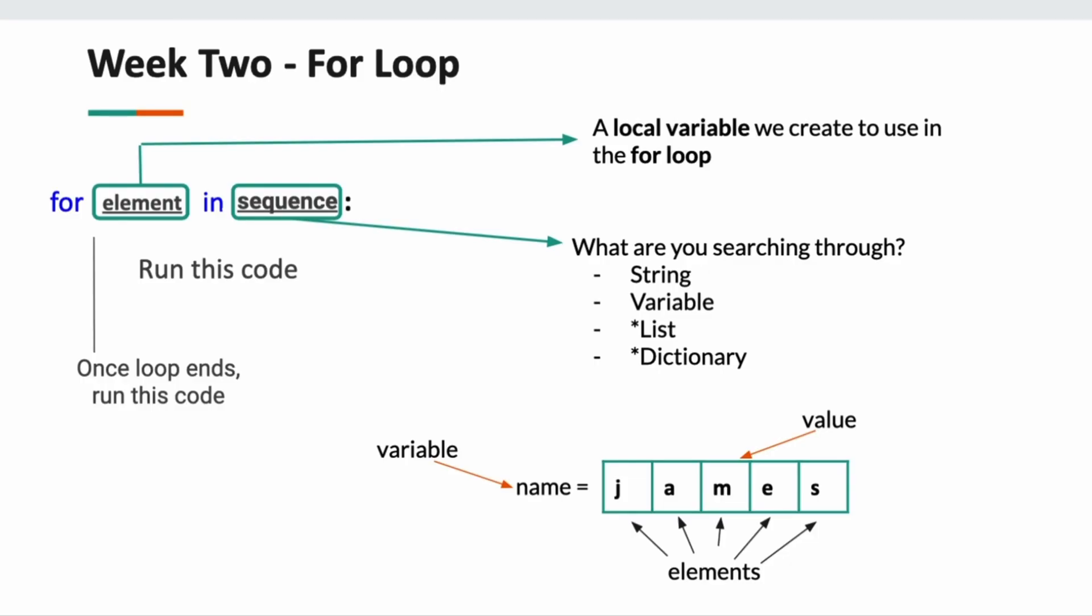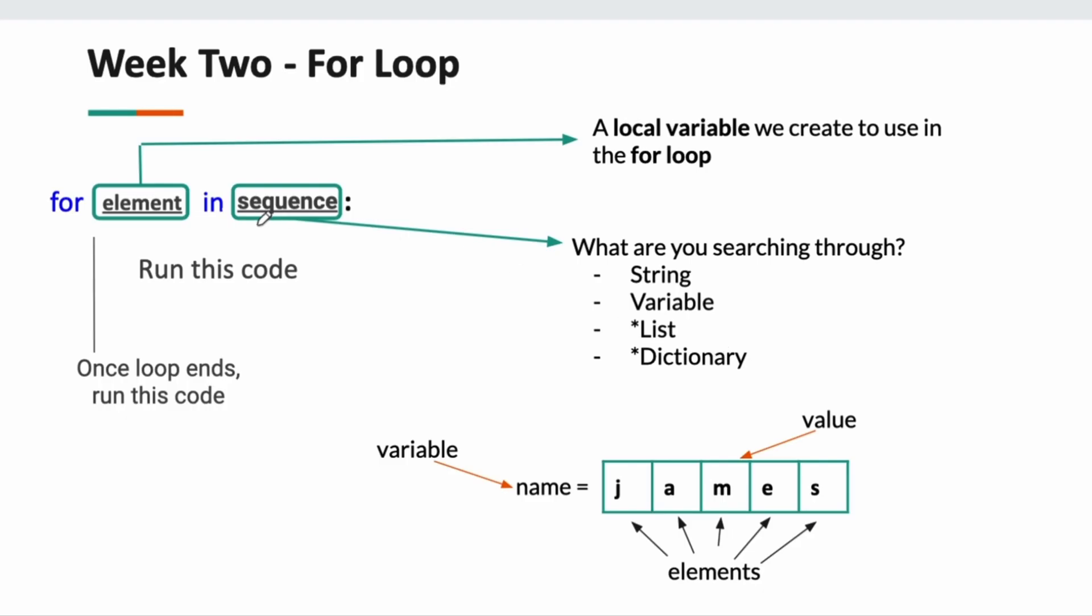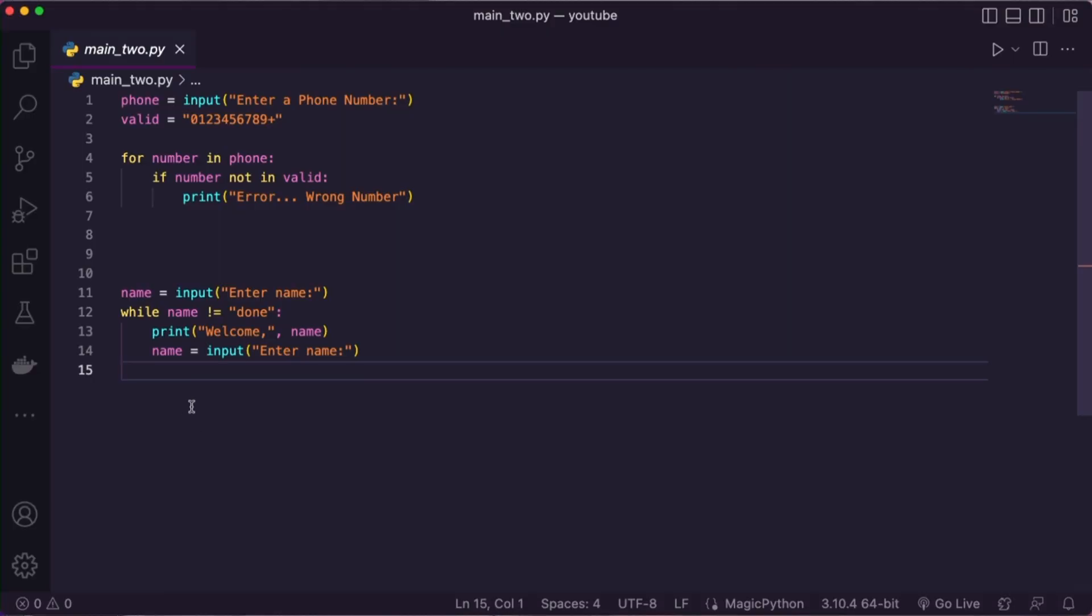That's the first loop. Now, as for the second loop is the for loop. Now, we use the for loop to iterate through something or go through something. So we start with for. We make an element. An element is like a variable you can use inside the for loop. And then we say, what do we want to search through? So, for example, if I want to go through this variable name, it's going to go J-A-M-E-S. Every letter, I can do something with that letter. That's why we use a for loop, to go through something.